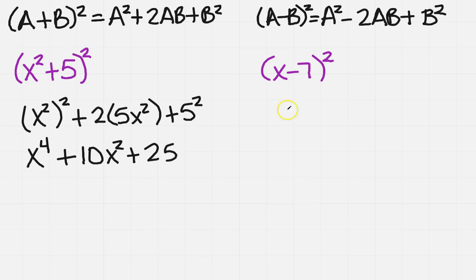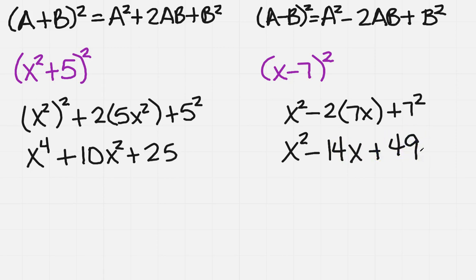So we're going to do x squared minus 2 times, I've got 7x, plus 7 squared. So I'm going to get x squared minus 14x plus 49. Did you get it right? Hope so.